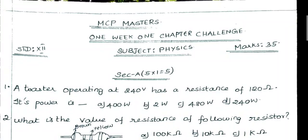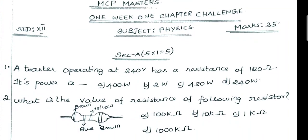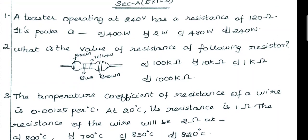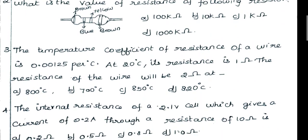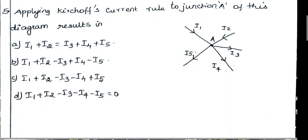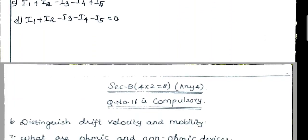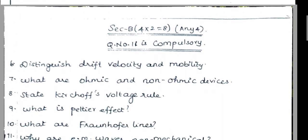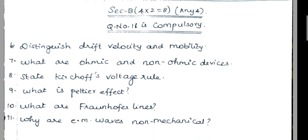Hi everyone. In this video, last physics question back paper pakala, Section A. So five one words. Pass poney one word study go map. Next, two marks: six question — distinguish drift velocity and mobility. Seven question — what